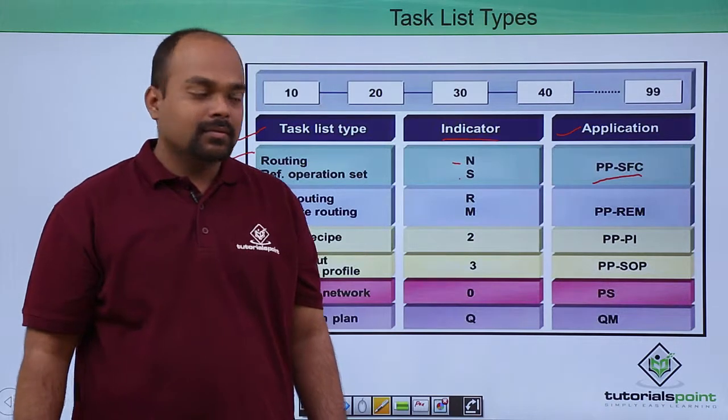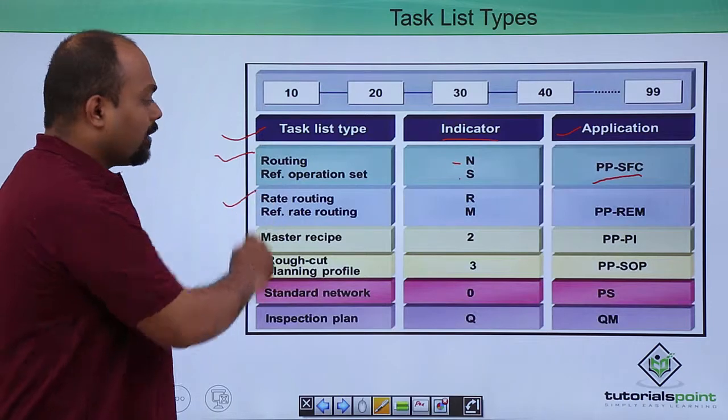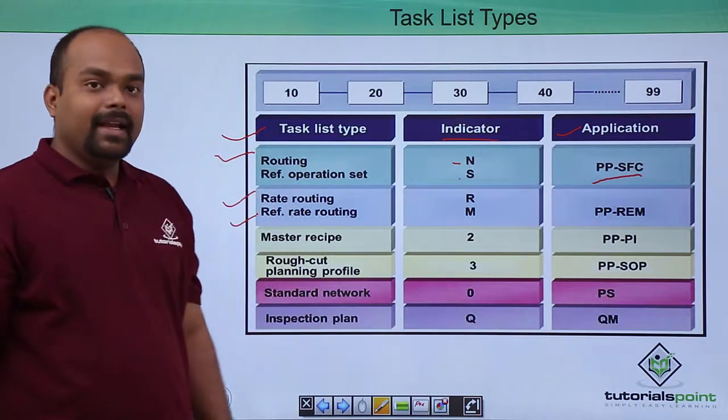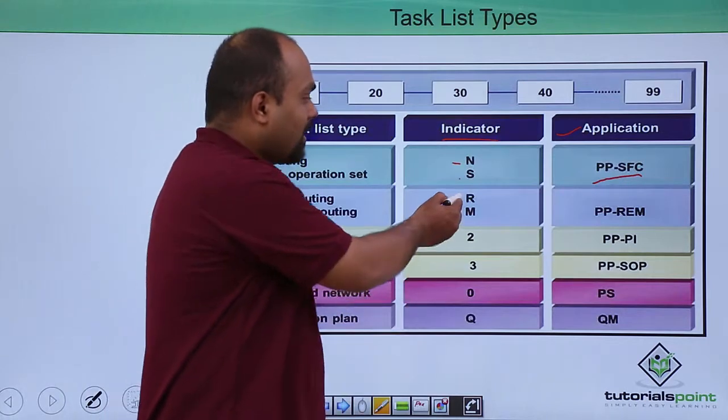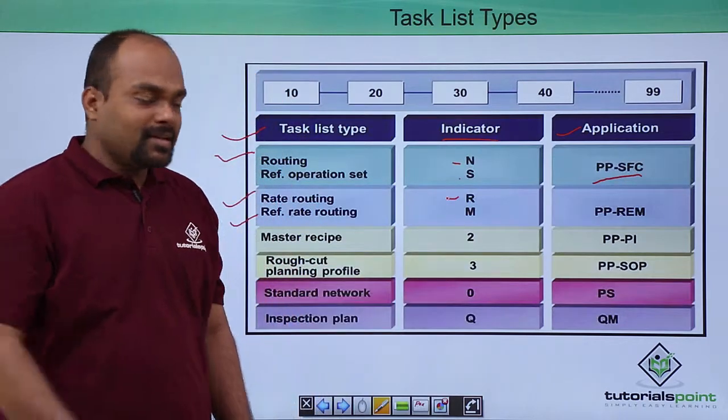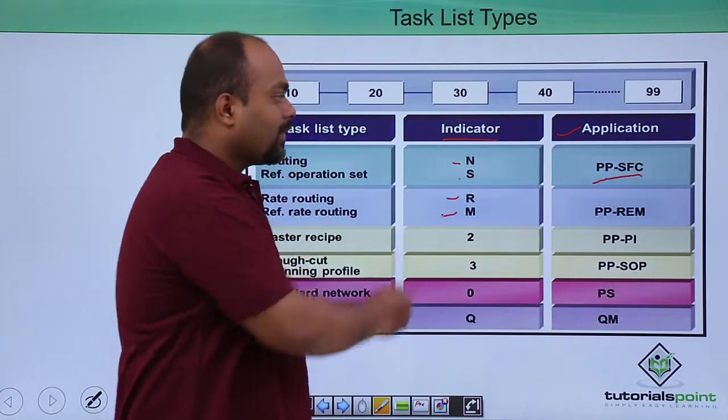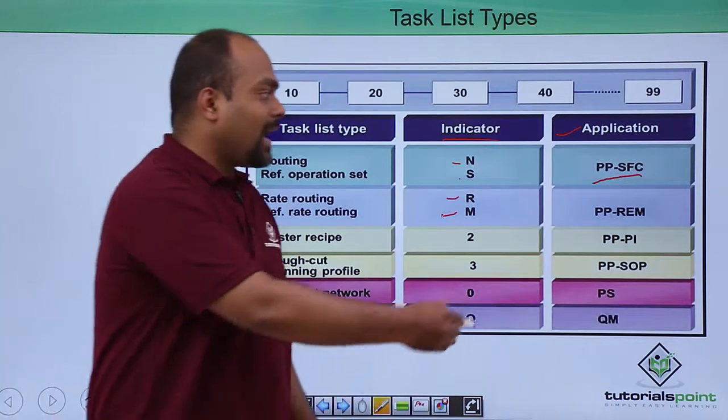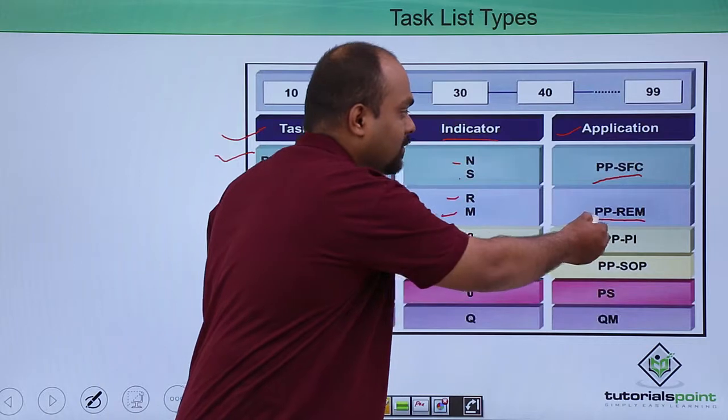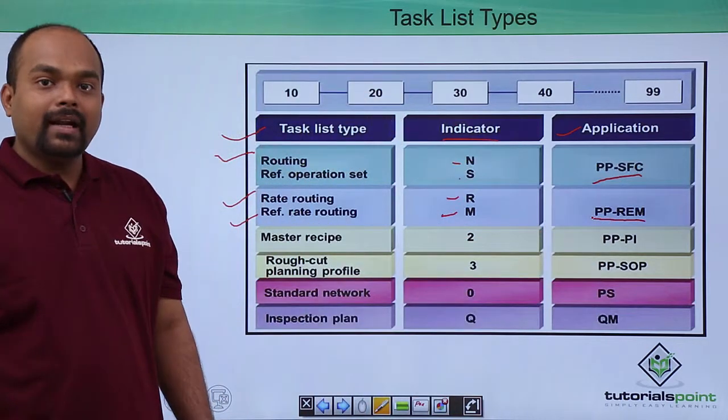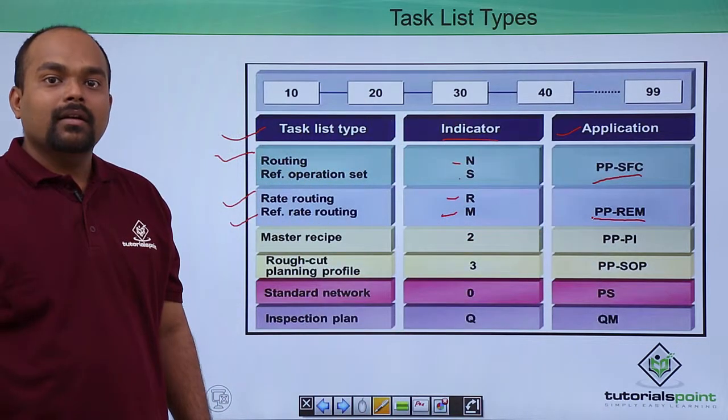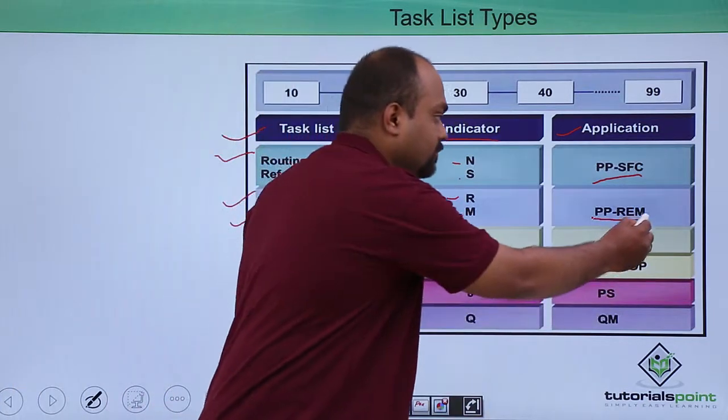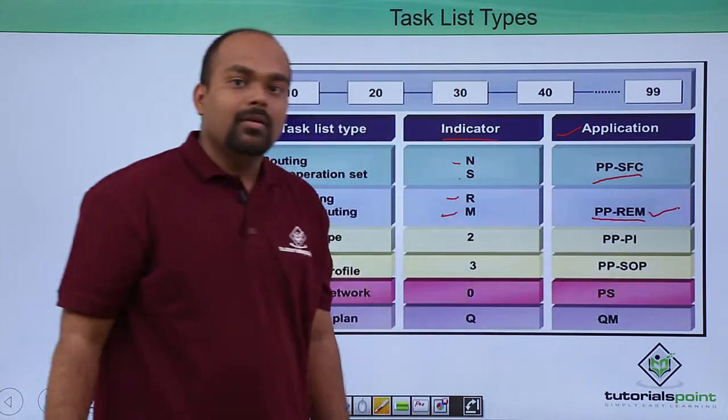Rate routing, reference rate routing. Indicator for rate routing is R, for reference rate routing is M, and the application is in production planning rate routing of repetitive manufacturing called as PPREM.